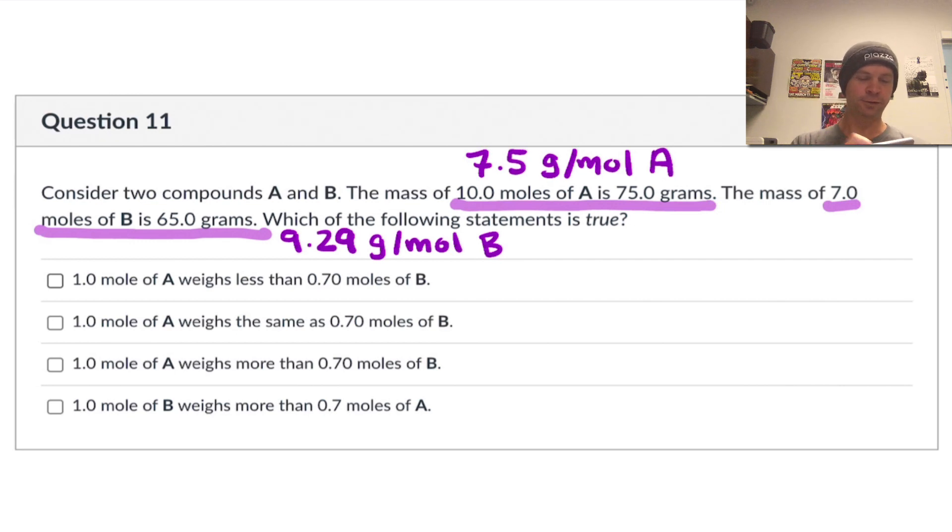So let's look at those together first. Let's look at 1 mole of A versus 0.7 moles of B and ask which of these three statements is true. So 1 mole of A, we've already established, weighs 7.5 grams. We got that from the molar mass. What's the mass of 0.7 moles of compound B? Well, we take the 9.29 grams per mole, and if we've got 0.7 moles of B, that corresponds to 6.5 grams of B. And so what we're realizing here is that 1 mole of A does in fact weigh more, more than 0.7 moles of B. 0.7 moles of B at 6.5 grams, 1 mole of A at 7.5 grams.